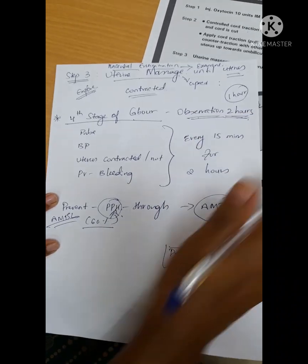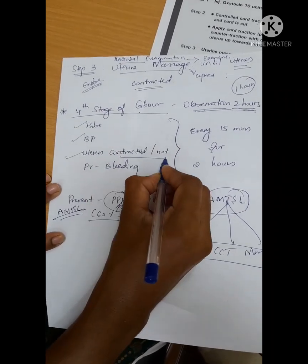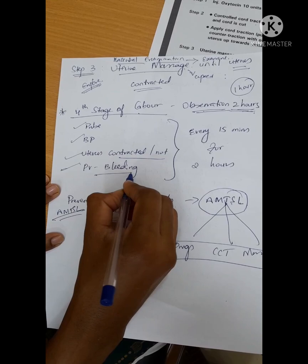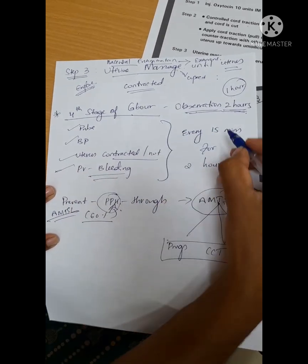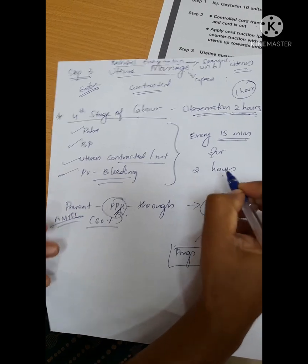The government has increased the observation period to two hours. So for two hours, we have to check the pulse, BP, uterus contraction, and per vaginal bleeding every 15 minutes for two hours. Once mother is stable, then you have to send the mother to the postnatal ward.